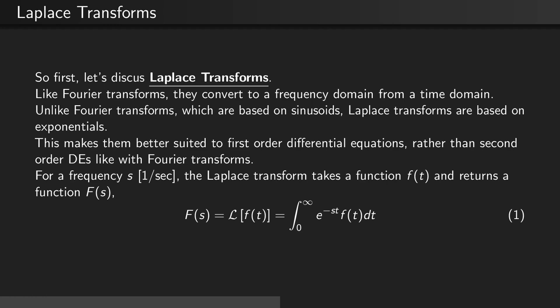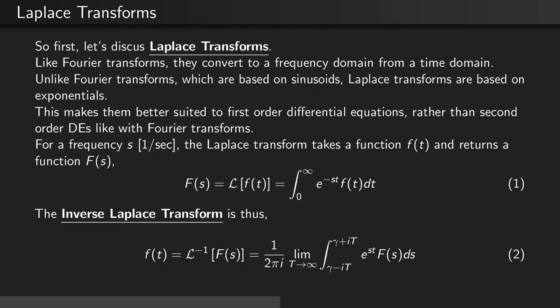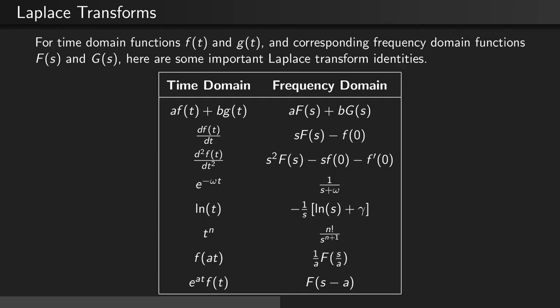For a frequency s in units of 1 over seconds, the Laplace transform takes a function f and returns a function f̃. f̃ is equal to the Laplace transform of f, which is equal to the integral from 0 to infinity of e to the negative st times f dt. The inverse Laplace transform states that you can recover f by taking 1 over 2πi times the limit as some period T goes to infinity of the integral from γ minus iT to γ plus iT of e to the positive st times our Laplace function f̃. This table presents some common Laplace transforms going from the time domain to the frequency domain, and vice versa.